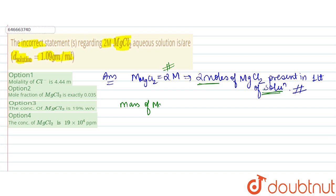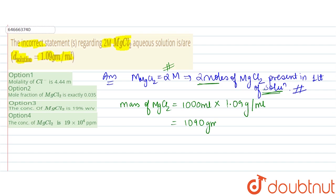The mass of solution equals volume × density = 1000 mL × 1.09 g/mL = 1090 grams. This is the mass of the solution, since the density given is that of the solution.